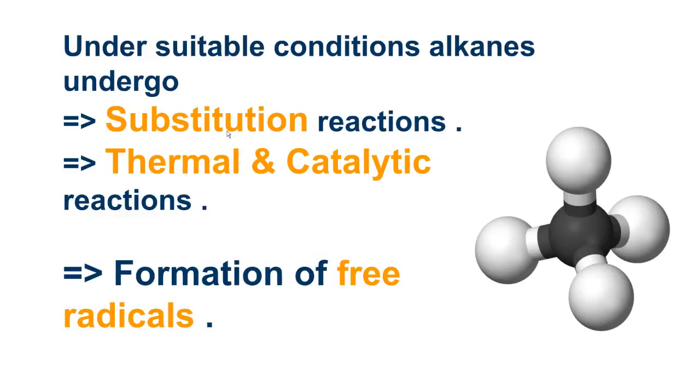Under suitable conditions, alkanes undergo two types of reactions: substitution reactions in which the hydrogens of alkanes are substituted by other molecules, and thermal and catalytic reactions which require heat and a catalyst. A catalyst is a substance that speeds up a chemical reaction without itself being consumed. These reactions take place at high temperature or through absorption of light energy through the formation of free radicals.